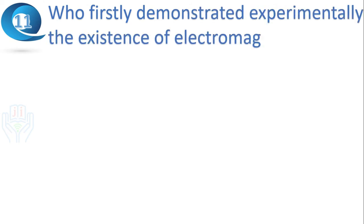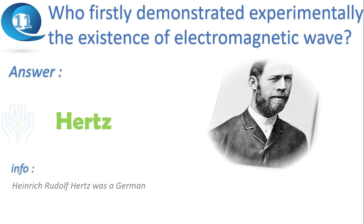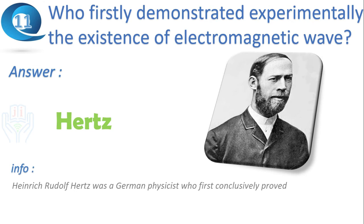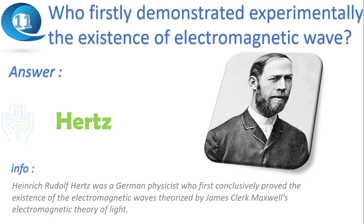Next question: who firstly demonstrated experimentally the existence of electromagnetic waves? Answer: Hertz. Heinrich Rudolf Hertz was a German physicist who first conclusively proved the existence of electromagnetic waves, theorized by James Clerk Maxwell's electromagnetic theory of light.